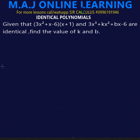In this video, you will learn how to solve identical polynomials. Here's the first example: the equations are given that (3x² + x − 6)(x + 1) and 3x³ + kx² + bx − 1 are identical. Find the value of k and b.